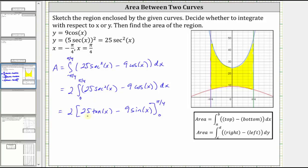And now we need to find 2 times the quantity big F of π over 4 minus big F of zero. So we first substitute π over 4 for x, which gives us 25 tangent π over 4 minus 9 sine π over 4. And then we have minus, and now we substitute zero for x, which gives us 25 tangent zero minus 9 sine zero.